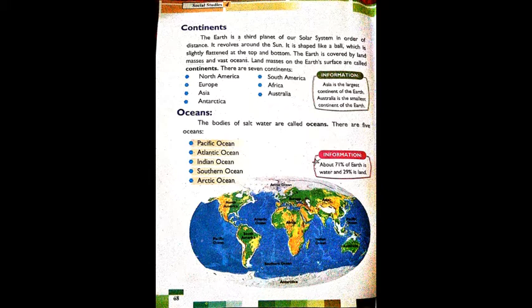The large pieces of dry land are called continents, and the large bodies of water are called oceans. The surface of earth is different at different places. Most of the continents have a variety of different types of landscapes.